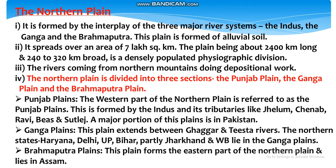Moving to the next topic: the Northern Plain (Uttari Maidan). It is formed by the interplay of three major river systems — the Indus, the Ganga and the Brahmaputra — and is formed of alluvial soil. Tīn pramukh nadī praṇāliyoṃ — Sindhu, Ganga aur Brahmaputra — se banā hai; yah maidān jalodh miṭṭī se banā hai. It spreads over an area of 7 lakh square kilometres, is about 2400 km long and 240 to 320 km broad. It is a densely populated physiographic division. The rivers coming from the northern mountains do depositional work.